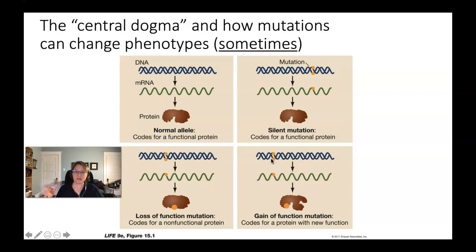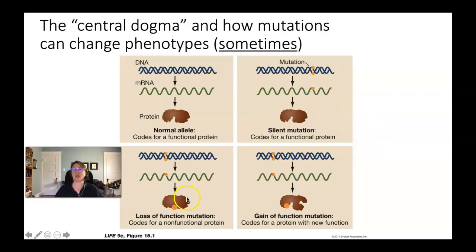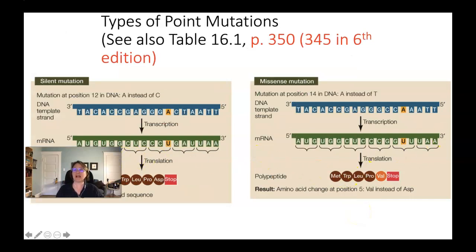Finally, it's possible — though very rare — that a change in the DNA sequence causes a change in the mRNA which causes a gain of function in the protein. Maybe the protein now has two active sites where it only had one. A gain of function mutation is possible but very unlikely. Overall, you're most likely to get a silent mutation, occasionally a loss of function mutation, and only very rarely a gain of function.